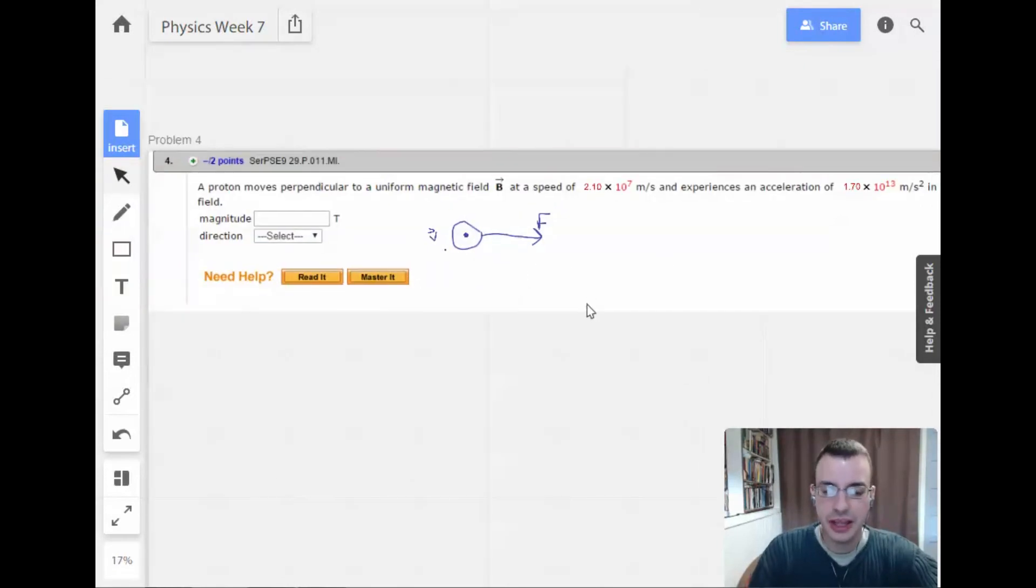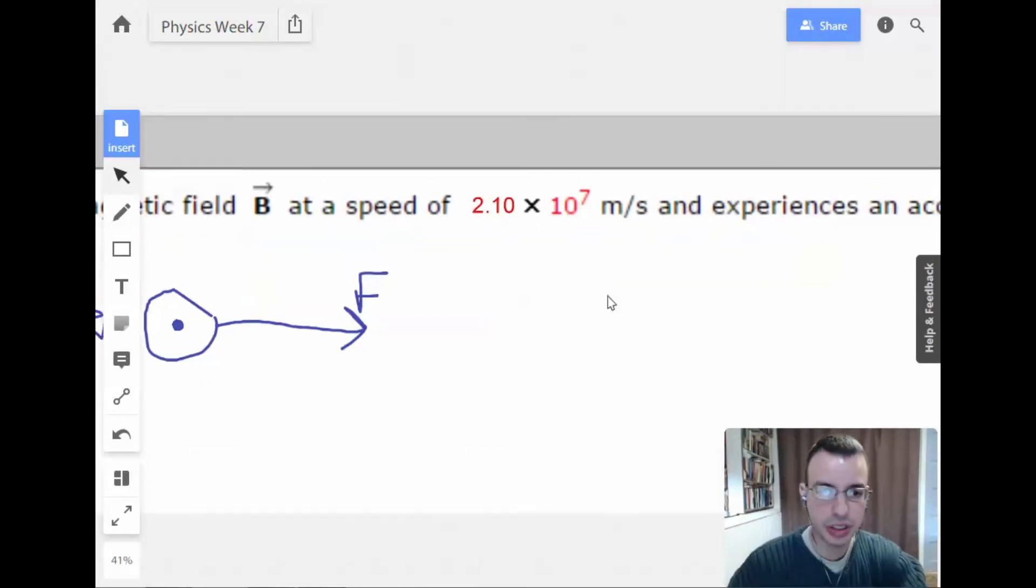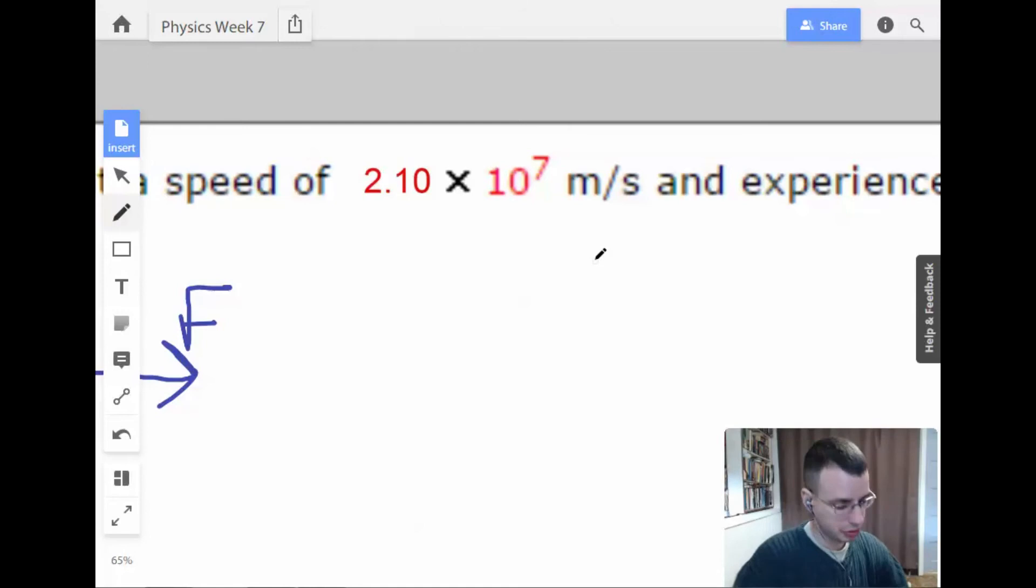All right. So now we need to determine the magnetic field. This kind of goes back to the first problem where we need to find the direction of the magnetic field. So we know, write up our equation real quick. So we know that force equals q v cross B. And I've got all these guys.